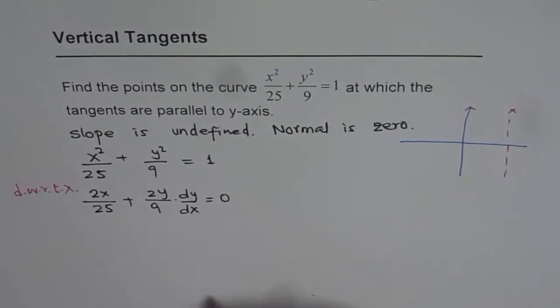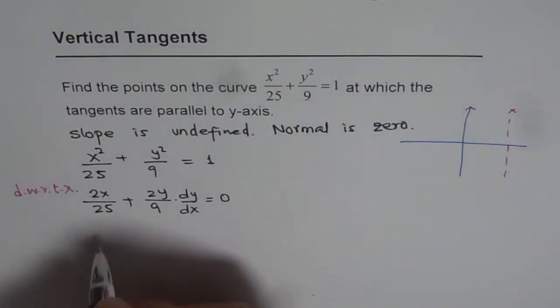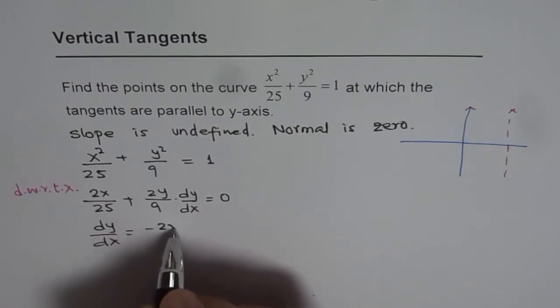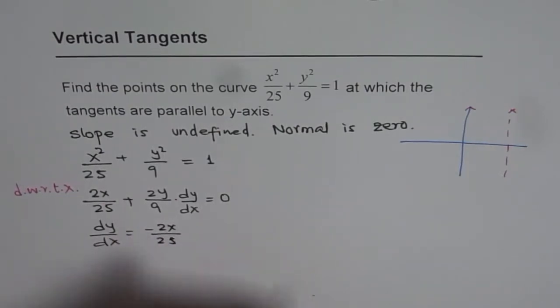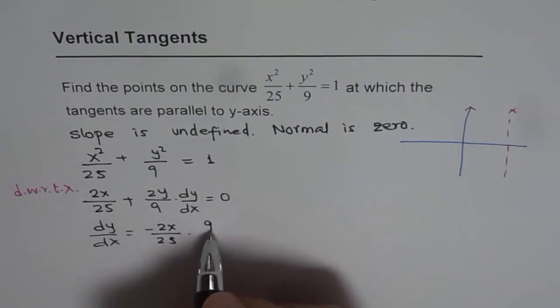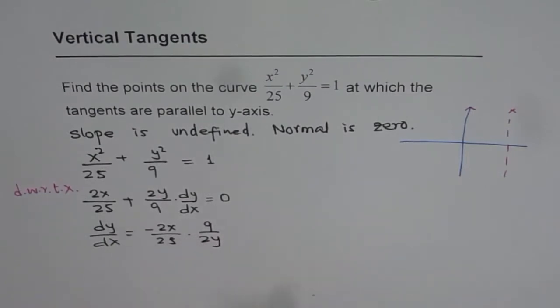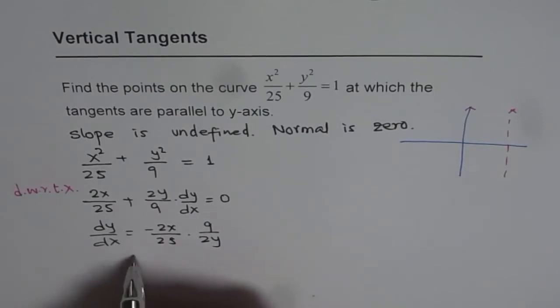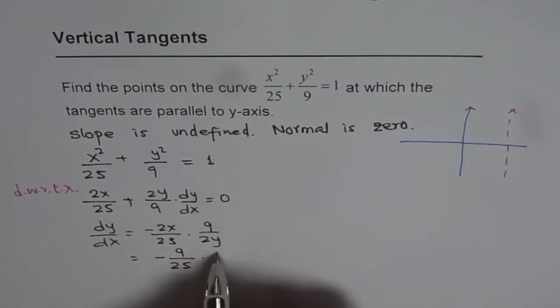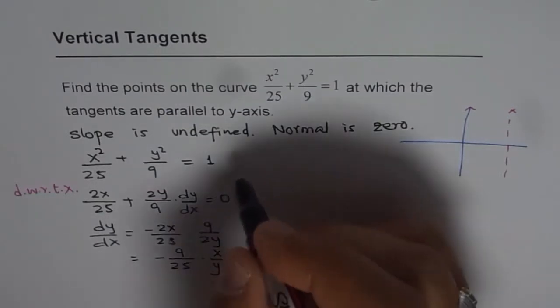Now from here we can find dy/dx. We can say dy/dx is equal to minus 2x over 25 times 9 over 2y. So this could be simplified and we could write this as minus 9 over 25 times x over y. So that is the derivative dy/dx.